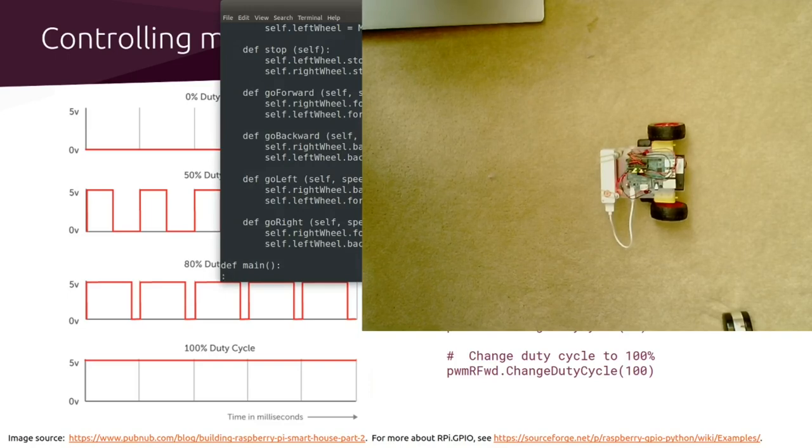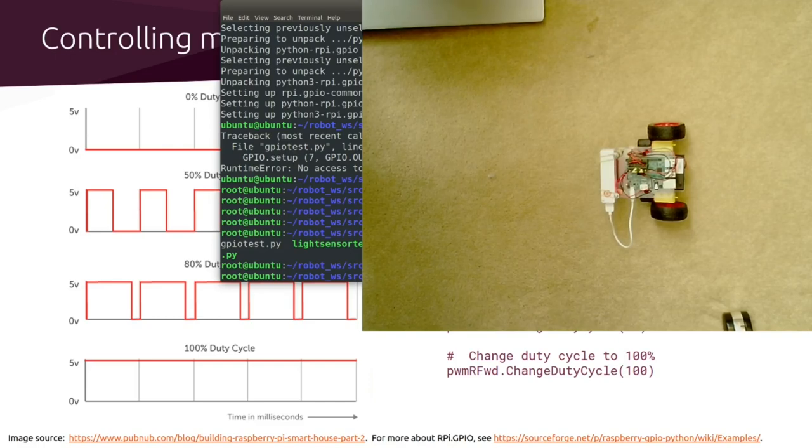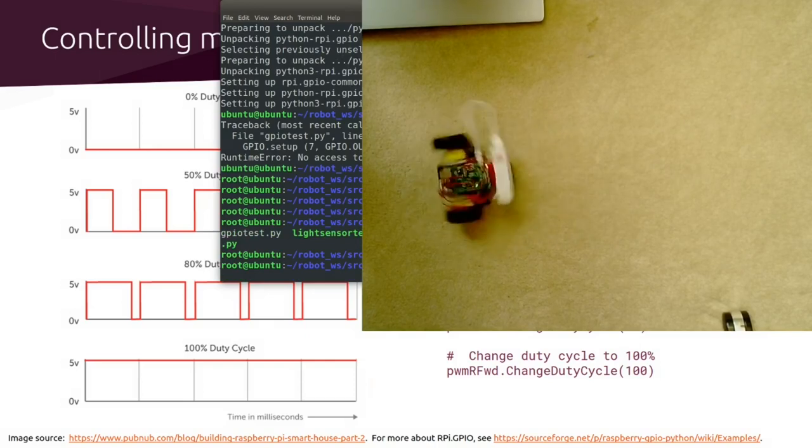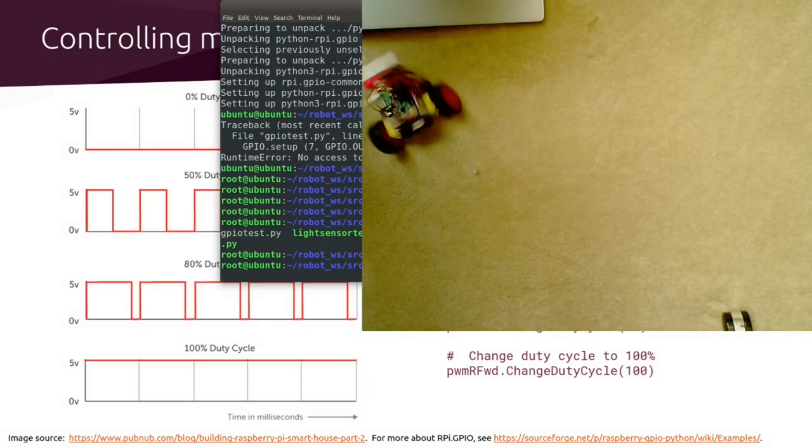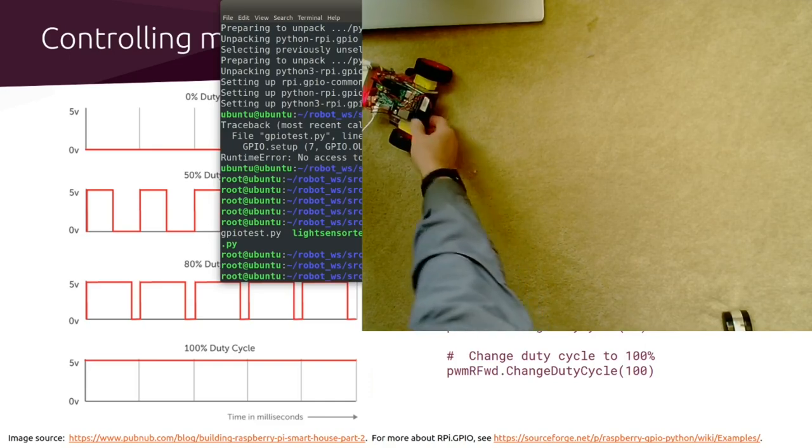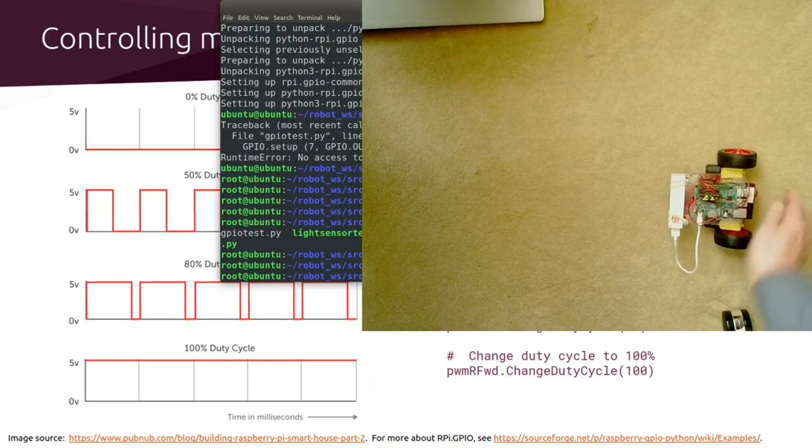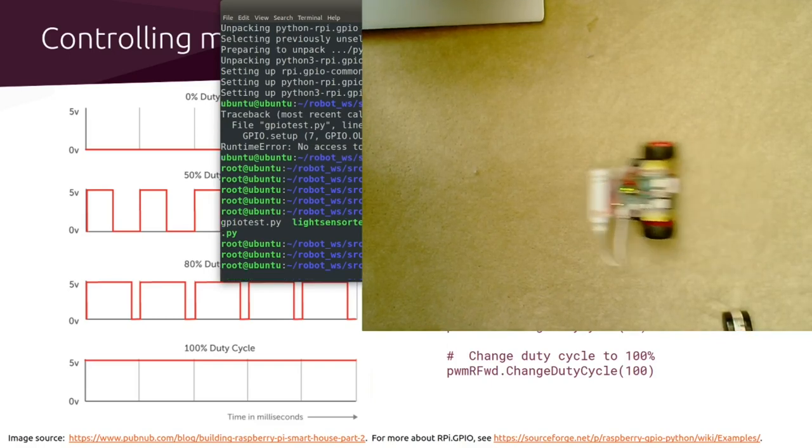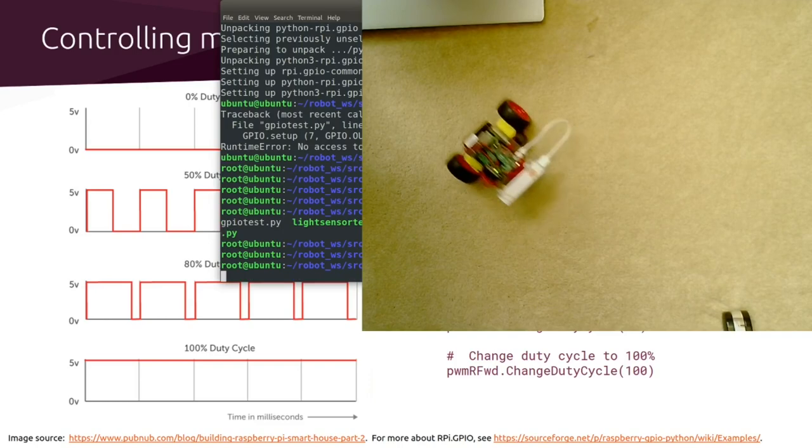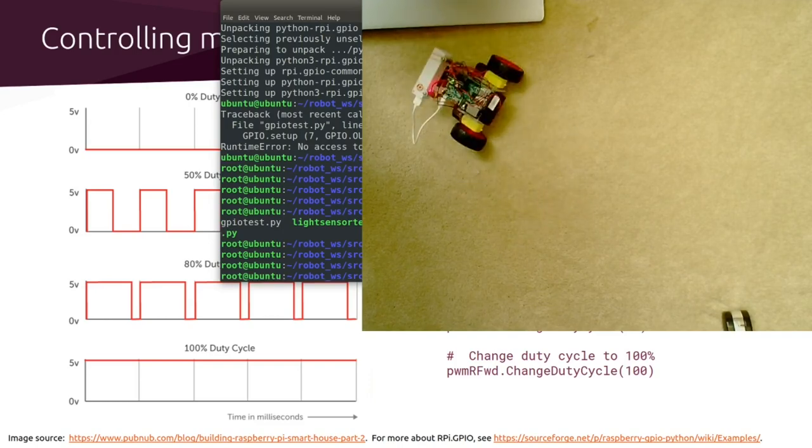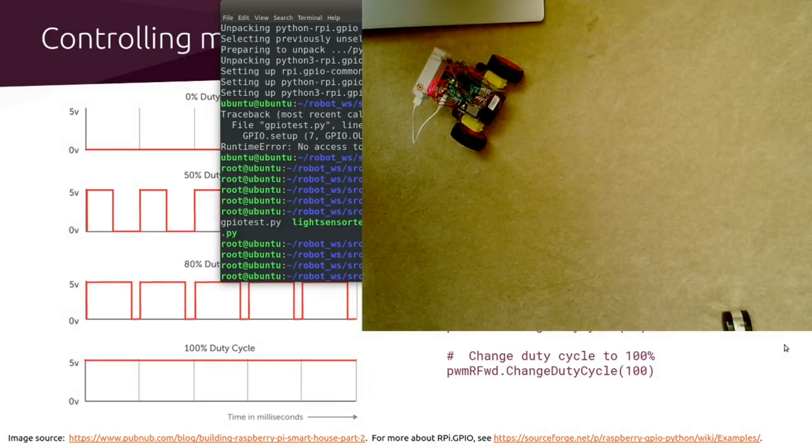So our robot's ready to go. Let's see what happens when we run this. There it goes, forwards, turn left, backwards, turn right. See that one more time. Forwards, turn backwards, turn. So we're back in business. We actually are able to control our robot with code. So we're well on our way.